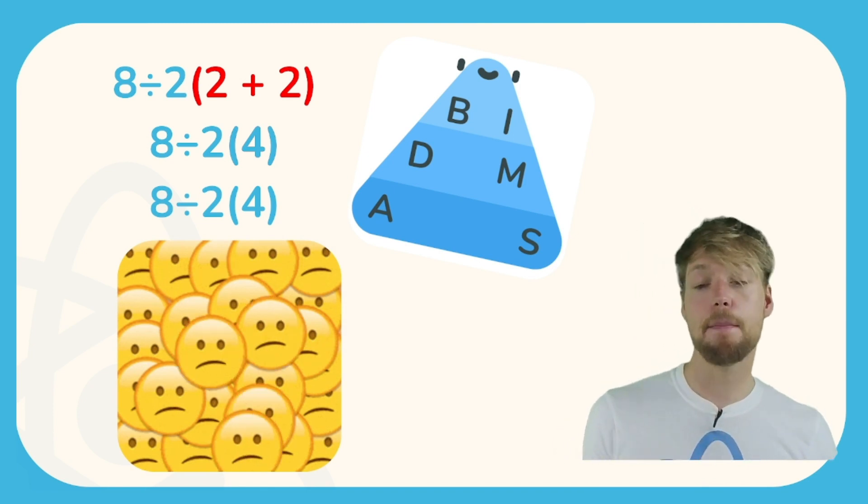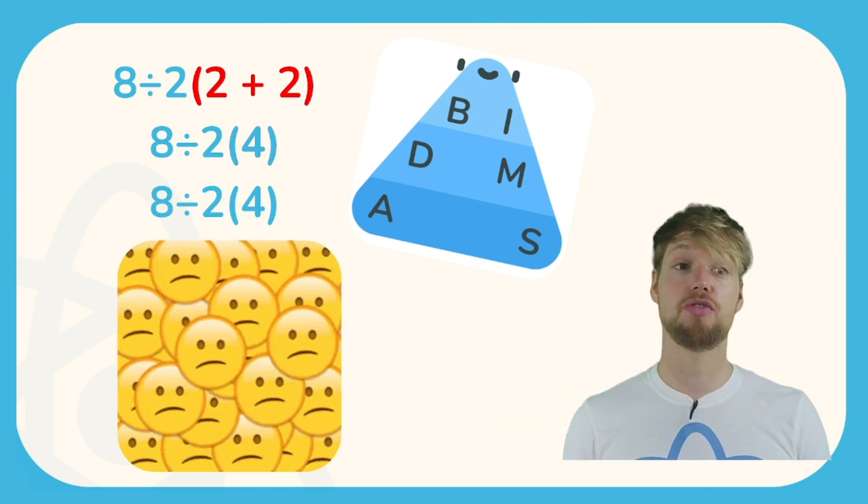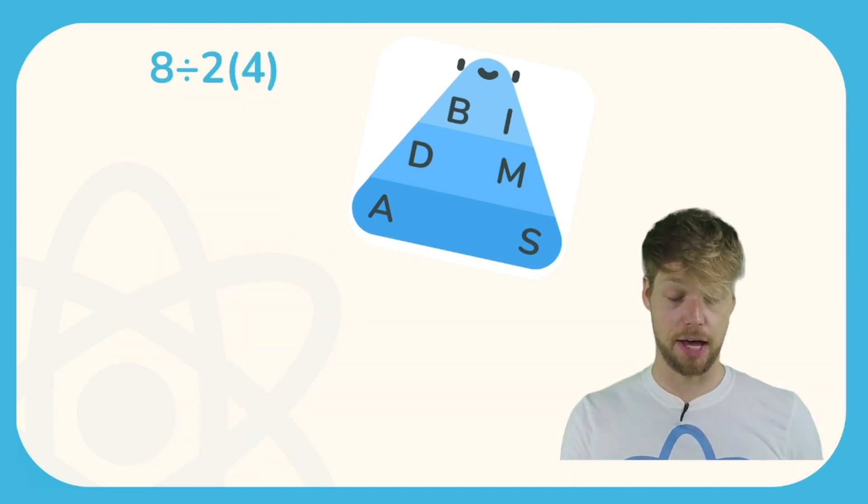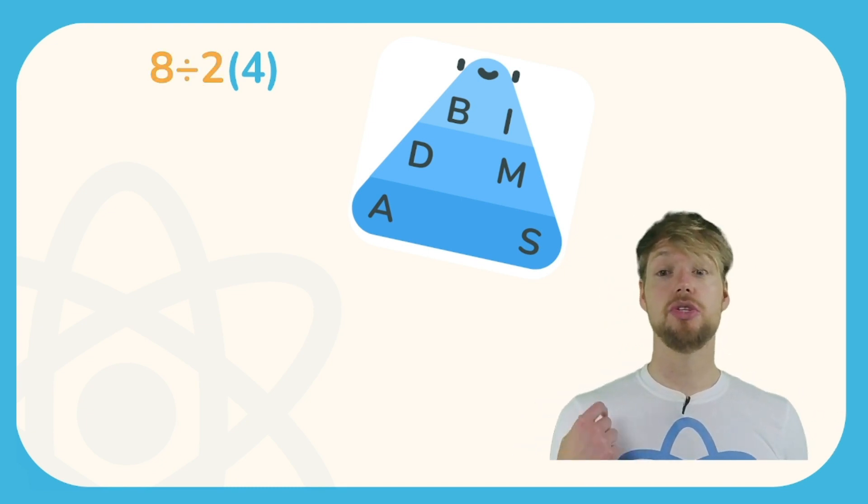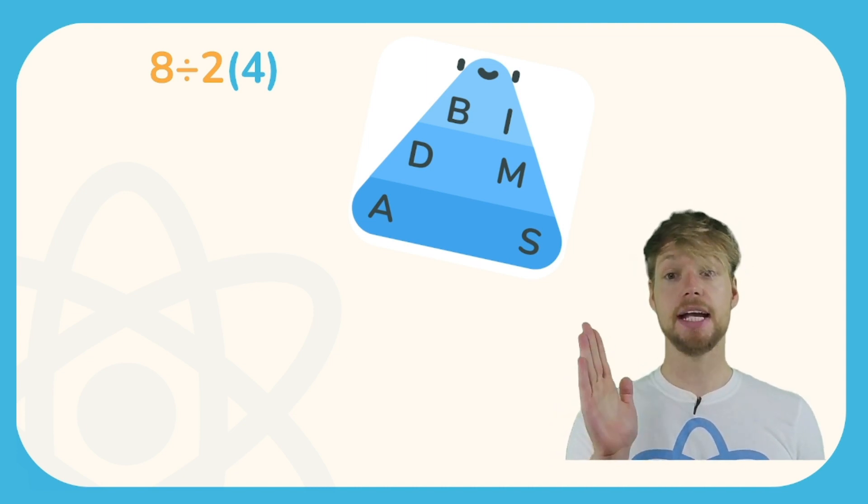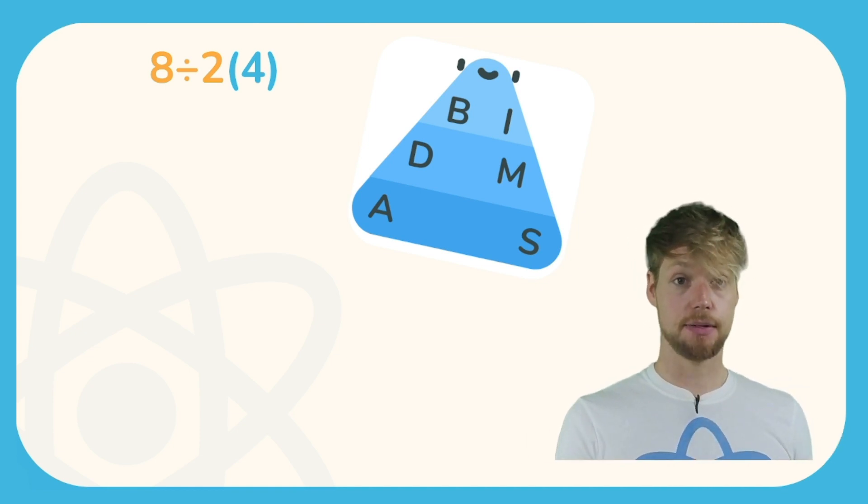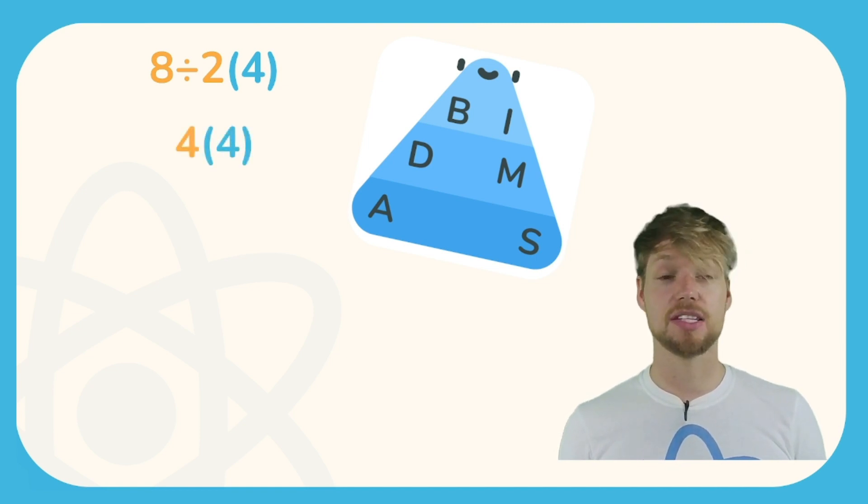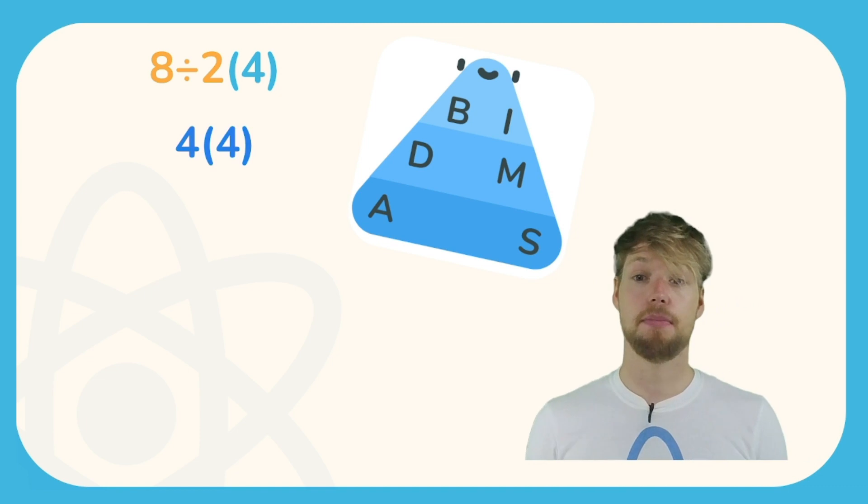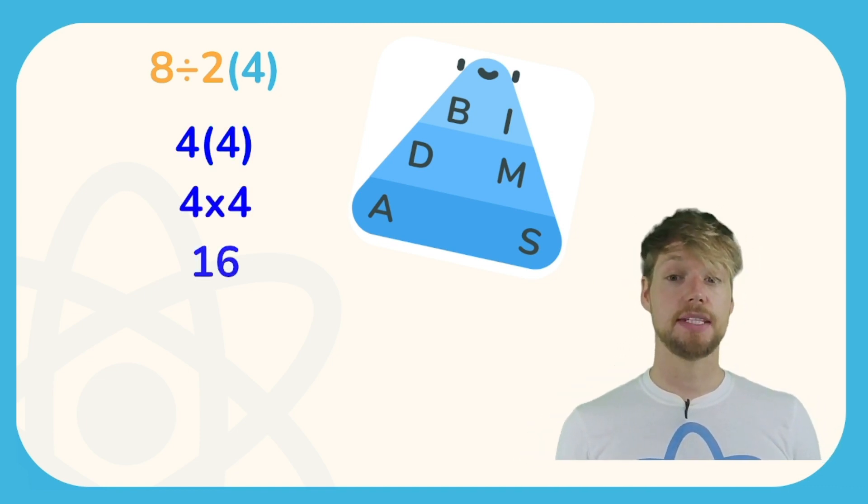I'm going to start with the correct way to answer this calculation. The first thing we need to do is look at our BIDMAS pyramid. We need to do the division first because if we read this calculation out loud it would be 8 divided by 2 multiplied by 4. We are on the second tier of the BIDMAS pyramid, that means we do the division first because we work from the left to the right. So 8 divided by 2, that is just 4. We then need to do 4 multiplied by 4 which is just 16. So 16 is the correct answer.